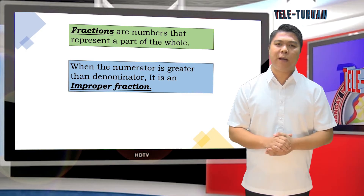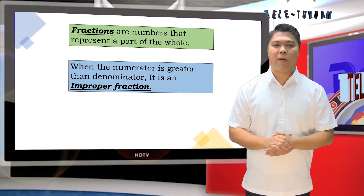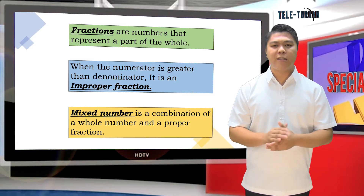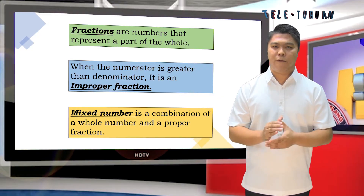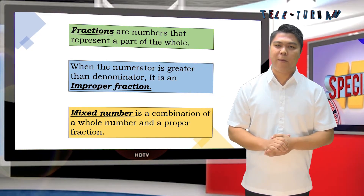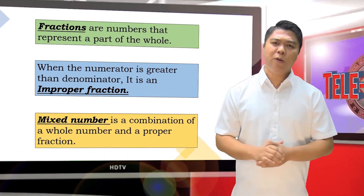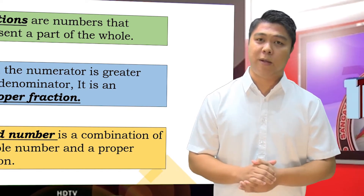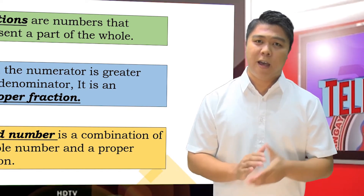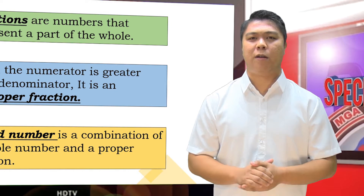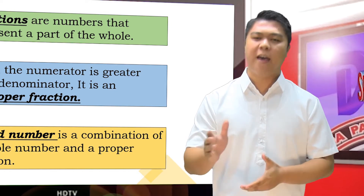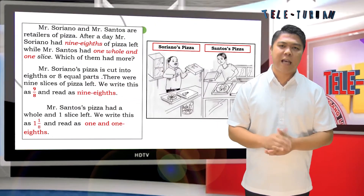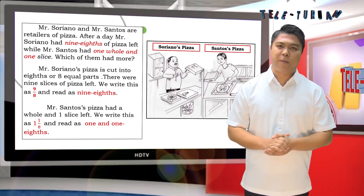When the numerator is greater than the denominator, it is an improper fraction. A mixed number is a combination of a whole number and a proper fraction. Do you know that we can change improper fraction to mixed number and mixed number to an improper fraction? To find out how to do it, let's have this word problem.